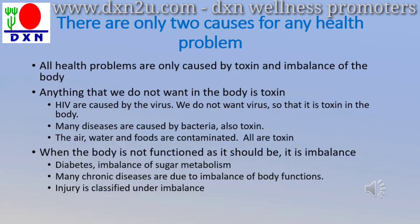Coming to Rule 1 of Gendronoma: there are only two causes for any health problem. We always ask the audience — can you think of any disease that is not caused by toxins or imbalance? Anything we do not want in the body is toxin. When the body does not function as it should, it is imbalanced. For example, HIV is caused by a virus — we don't want the virus in the body, so it is a toxin.